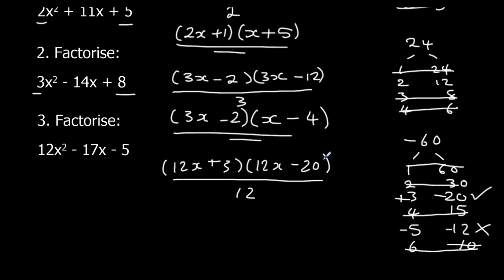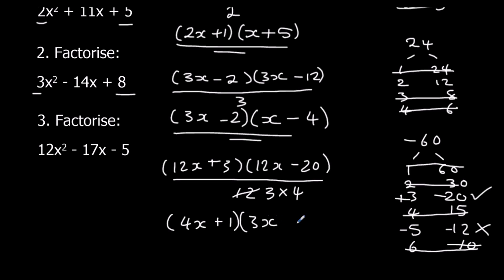I need to cancel this now. 12 and 3 are both in the 3 times table, so I'll cancel that bracket by 3, and 20 should be in the 4 times table — and it is. So 12x divided by 3 is 4x, and 3 divided by 3 is 1. Then 12x divided by 4 is 3x, and 20 divided by 4 is 5. That's the final answer. Again, you can check by expanding and you should get back to 12x squared minus 17x minus 5.